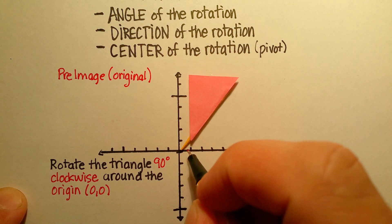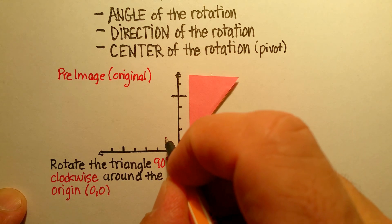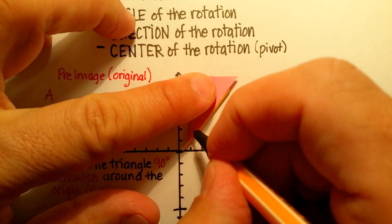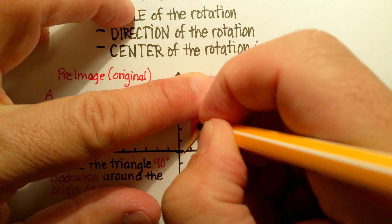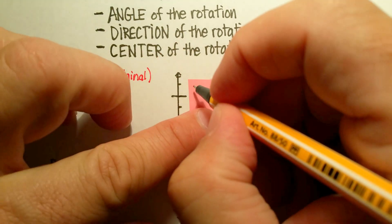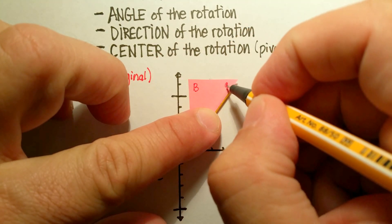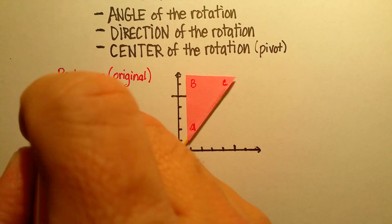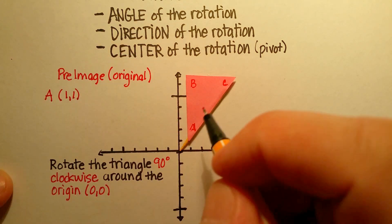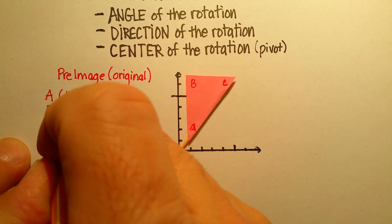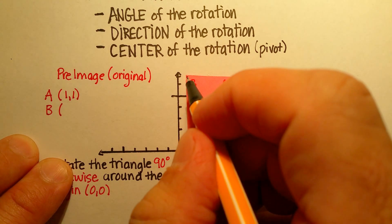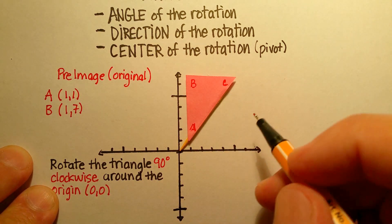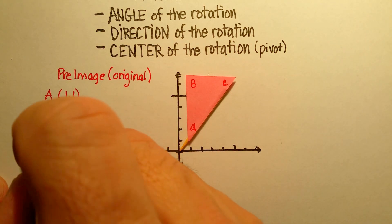I'm going to call this point down here point A, this one point B, and this one point C. Let's go ahead and mark what the locations are. We know that A is at (1, 1). B looks like it's at 1 along the X and 7 along the Y, so (1, 7). And C looks like it's at (5, 7).